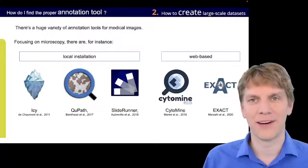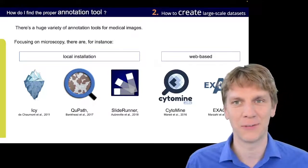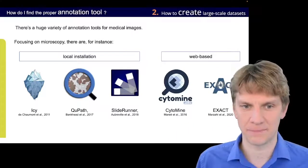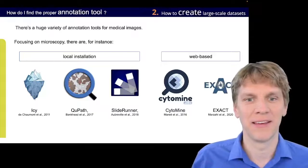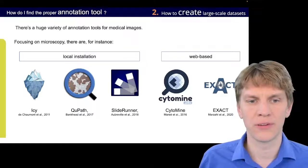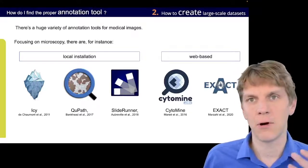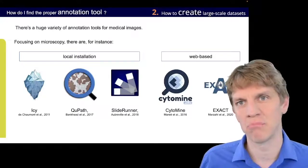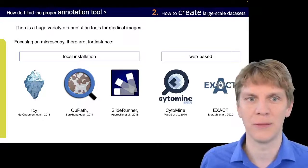Starting off with how do I find the proper annotation tool? As I said, we went through the effort of creating our own that was then specifically tailored to single-click annotations to really efficiently annotate cells. But as you can see here on the slide, there's so many different annotation tools that all work well. Of course, we have local tools like QuPath, also our SlideRunner, or web-based like Cytomine or our EXACT tool. And I think all of them, they serve a slightly different purpose best, but all of them can be really applied for annotation in general.